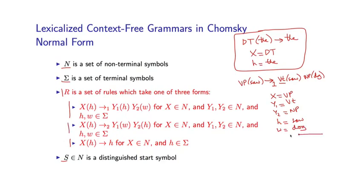This case is similar. Let me give an example of this rule. This, for example, could be S(saw) goes to subscript 2, NP(man) VP(saw). Notice in this case, the head word comes from the second child, and that's why the arrow is annotated in this way.